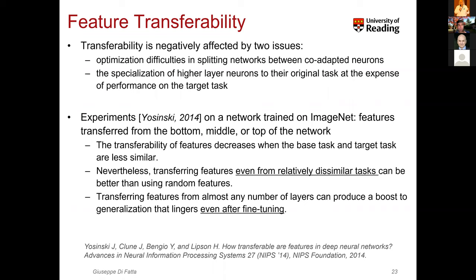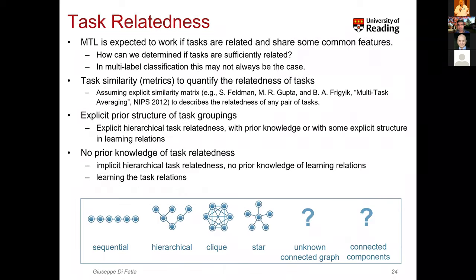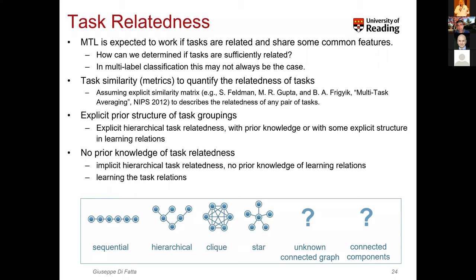The second area of challenges is the relation among the tasks. This is quite complex and the area which has been less explored. The questions are: how to measure the task similarity, how to exploit prior knowledge about task groupings, and what to do if there is no knowledge at all. Maybe the tasks are related in a sequential or hierarchical way, there is a fully connected graph in the similarity matrix, or there are subgroups — clusters of tasks.